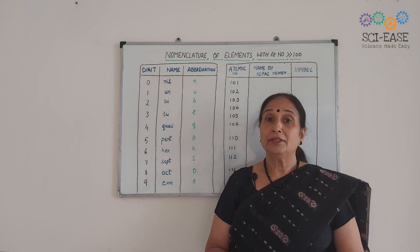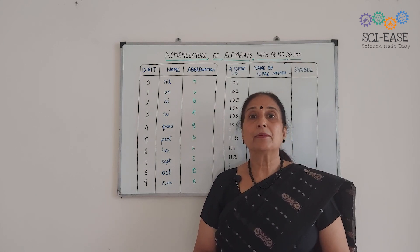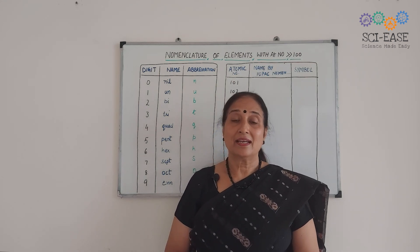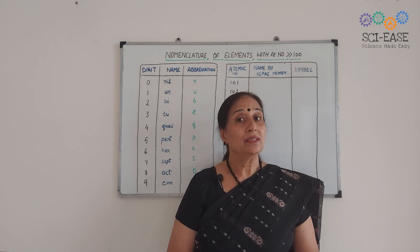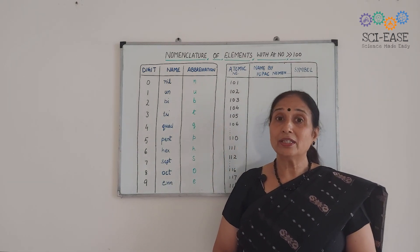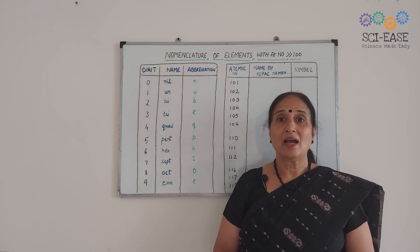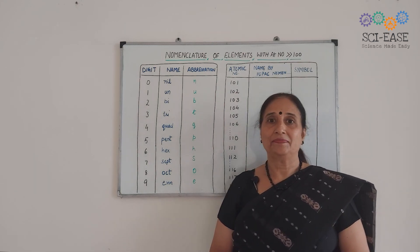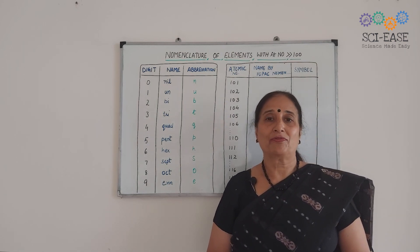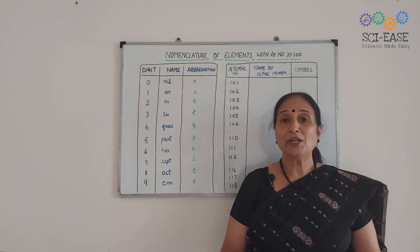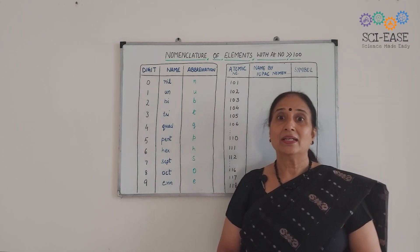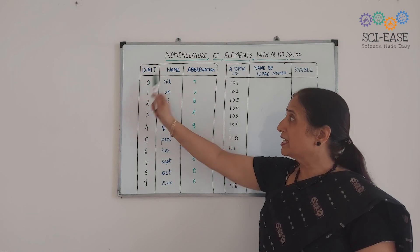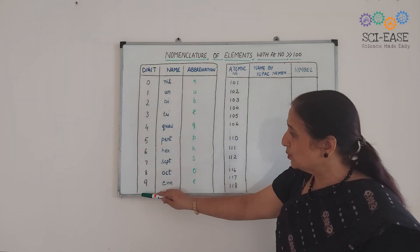The naming of new elements had been traditionally the privilege of the discoverer. But in recent years, this has led to controversy. So in order to avoid such problems, IUPAC has given a systematic nomenclature derived from the atomic number of the elements. IUPAC has used numerical roots for zero and the numbers one to nine.